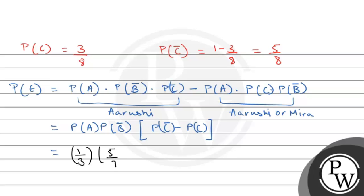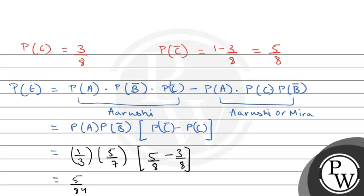Calculating: 1/3 multiplied by 5/7 multiplied by 3/8, which gives 5/84. So 5/84 is the probability of event E — the probability that only Aryoshi and Mira solve the problem correctly.